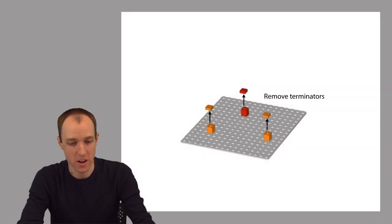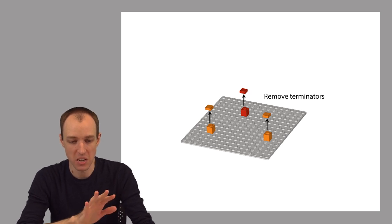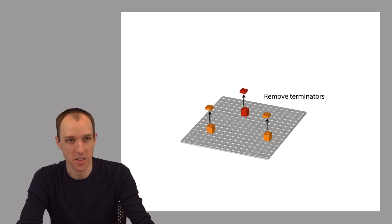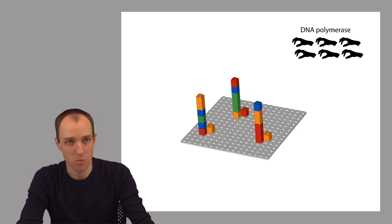Well, next we remove the terminators. There's a way that you can cleave off the terminators from these bases, so that they're no longer blocking us from adding more bases. And then we basically repeat. We repeat this entire process.